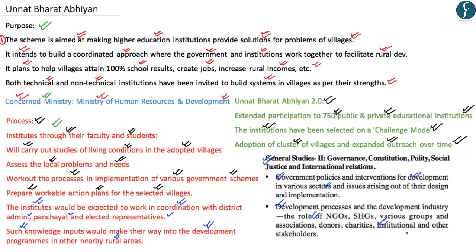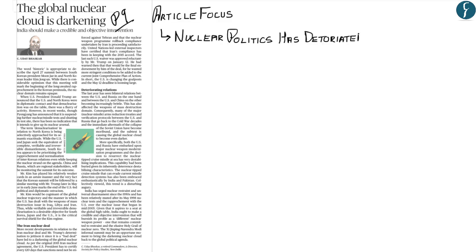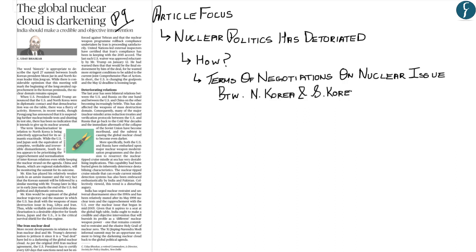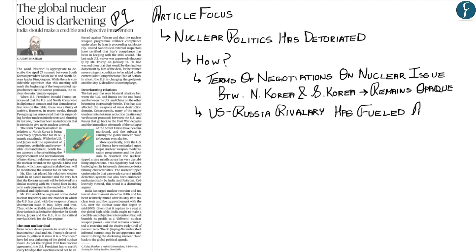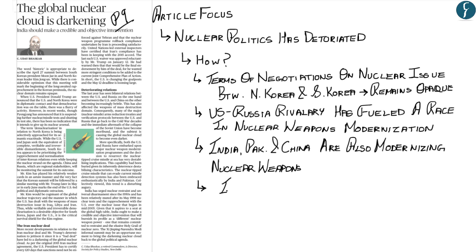The next article is an editorial from page 9, discussing how nuclear politics has deteriorated. The author gives several examples: negotiations on the nuclear issue between North Korea and South Korea remain opaque; the US-Russia rivalry has fueled a race in nuclear weapons modernization; and India, Pakistan, and China are also modernizing their nuclear weapons.